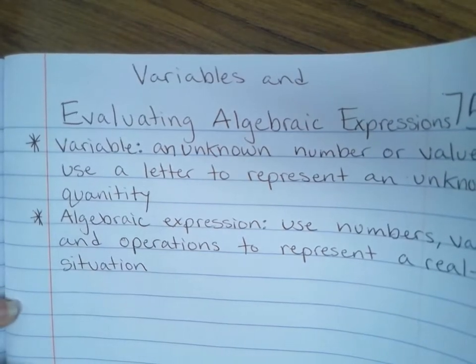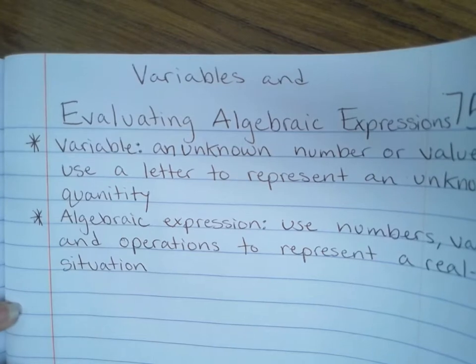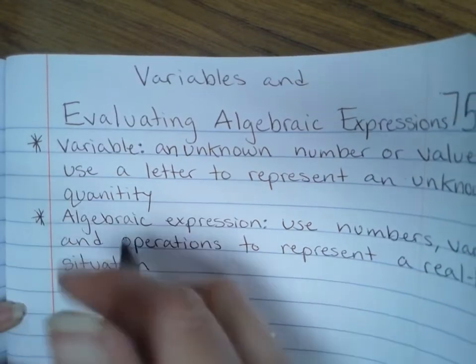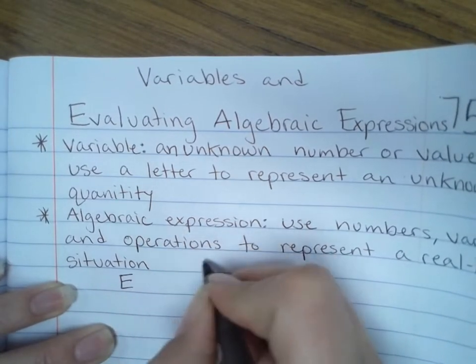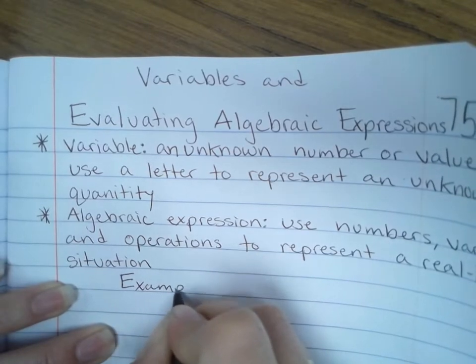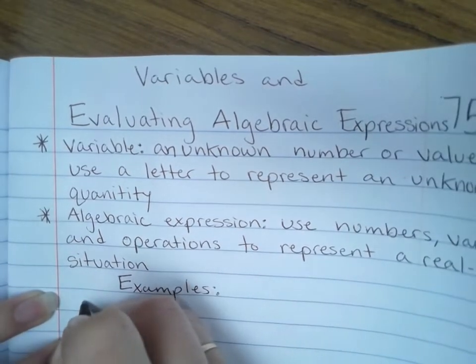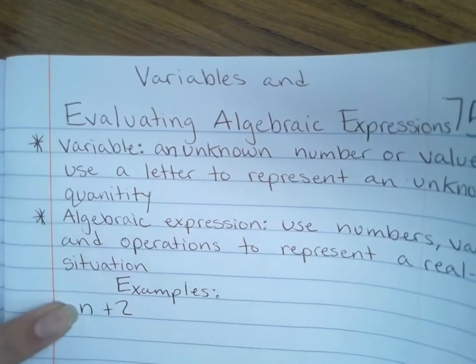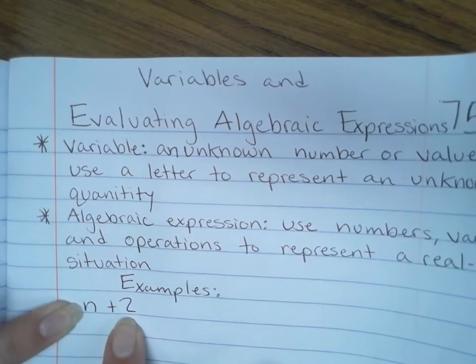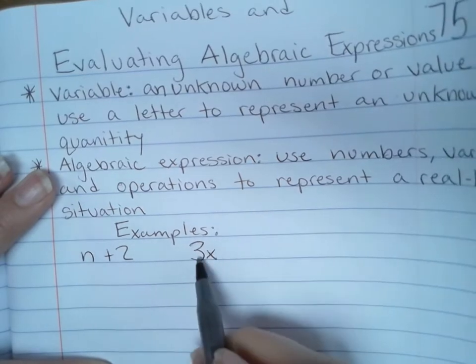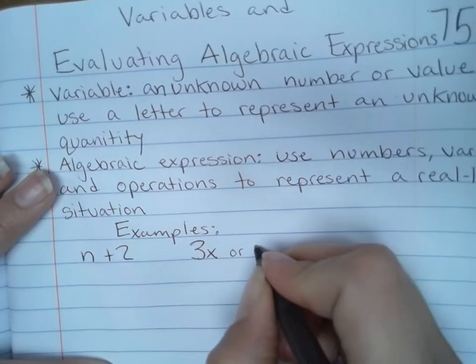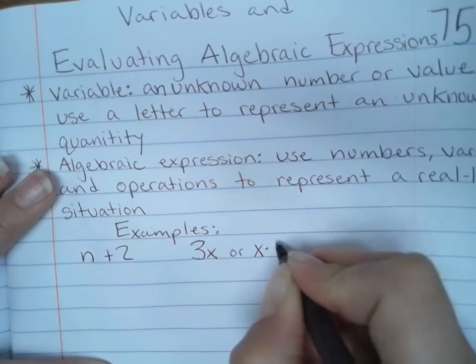There are a few things you need to get used to. You're going to need to get used to having a variable which is just a letter. All it means is an unknown value. So here are some examples. We could have n plus 2. That means some number and two more were added to it. 3x means 3 times x. So another way we could write it would be x times 3.